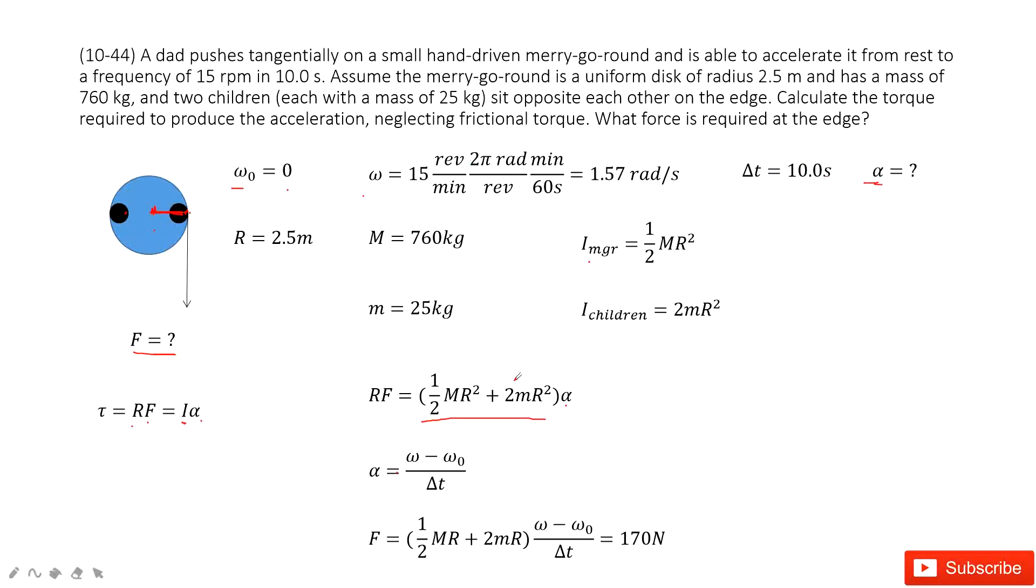So now we input all these two equations inside. We can get the function, the force as a function of this one. Inside this function, you can see the mass is given, r is given, ω is given, ω₀ is given, Δt is given. You just input all the known quantities. Get the final answer: 170 newtons.